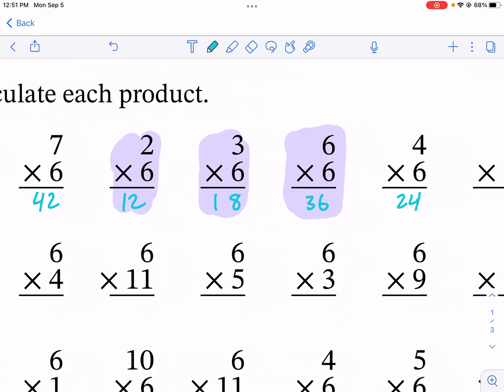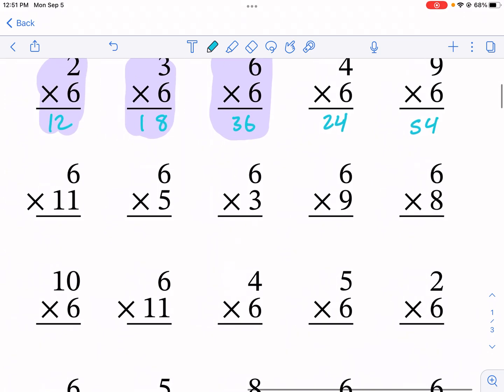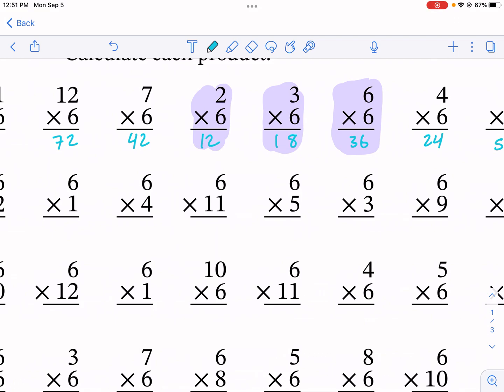Then we have nine times six, 54. The nines have a strategy, I'll talk about that when I get to the multiplying by nines video. I think we're almost done with all the different combinations here and then there's just a lot of repeats.